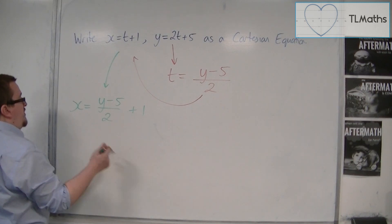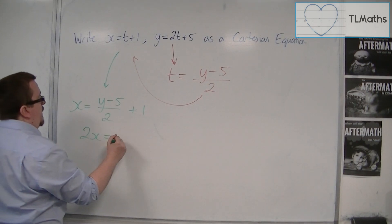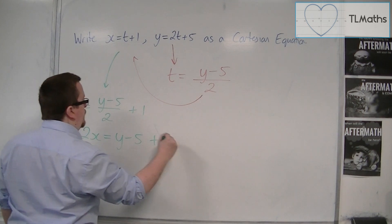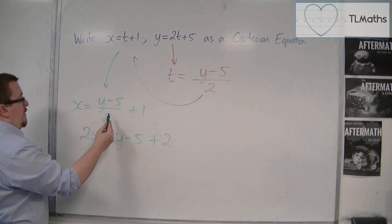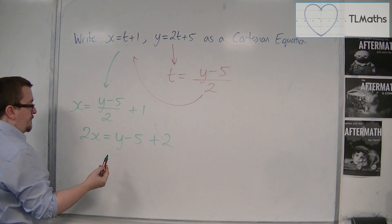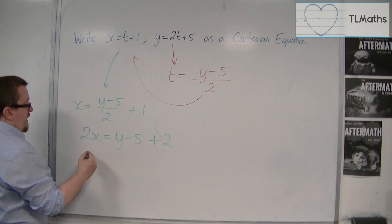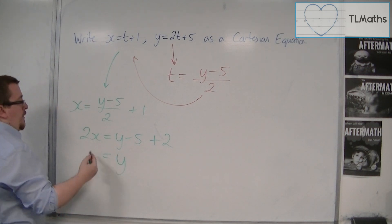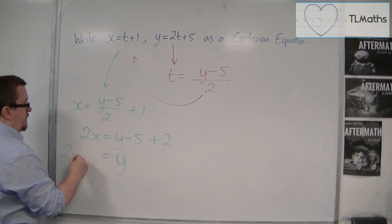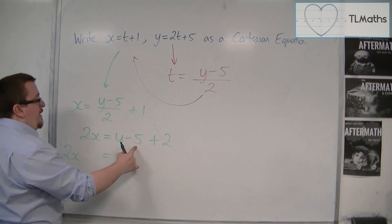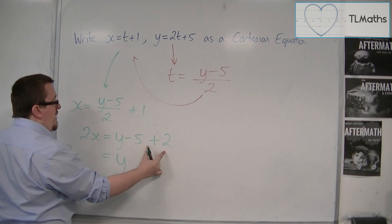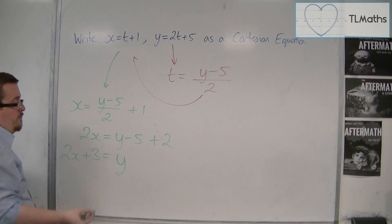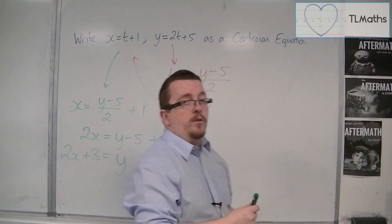If we multiply everything by 2, we get 2x = y − 5 + 2. Then we can write y = 2x + (−5 + 2), so that's minus 3, meaning y = 2x + 3 once we add 3 to both sides. And we've returned to the same equation as before.